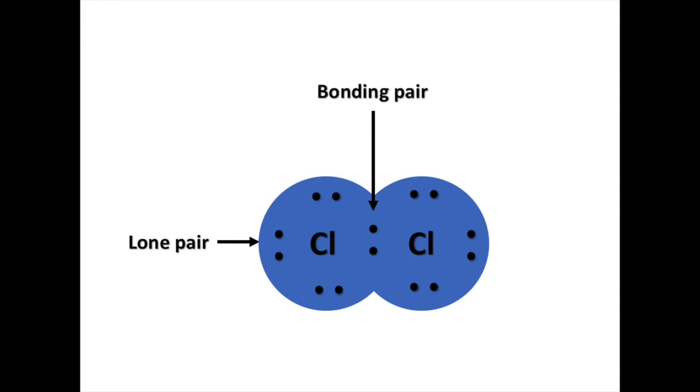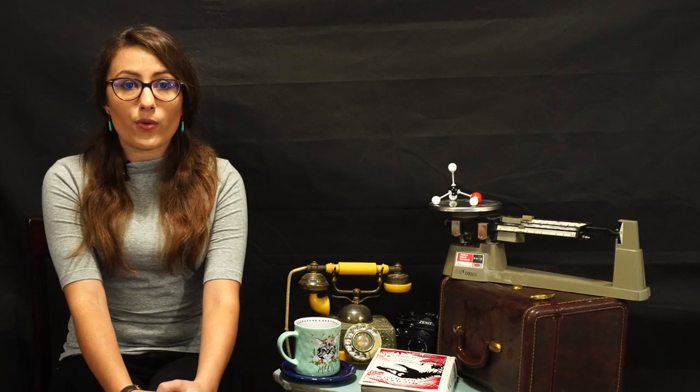With covalent bonding, electrons are shared between atoms. The electrons being shared are attracted to both nuclei and are known as a bonding pair. By sharing electrons, each atom is able to attain an octet configuration, which lowers the potential energy, making the bond formation favorable. This is because when an atom has eight valence electrons, it has a full shell. This is known as the octet rule.